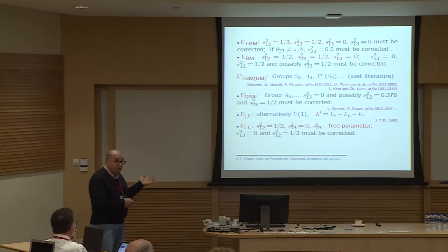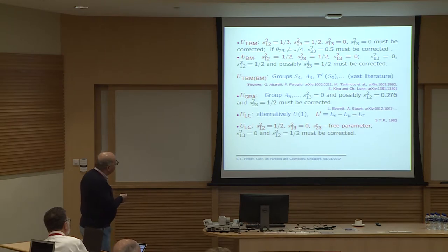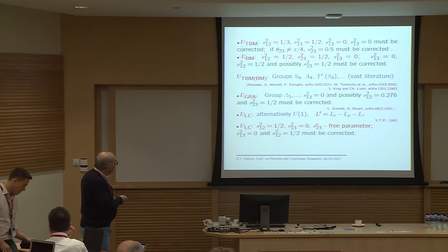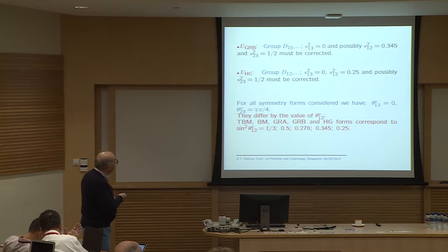These symmetry forms can be obtained from symmetry considerations. Tri-bimaximal mixing can come from groups S4, A4, or T′ (the double cover of A4). Bimaximal mixing can be generated by S4. Golden ratio A can be generated by A5 (even permutations of five objects). Golden ratio B can be generated by the dihedral group D₇, and hexagonal symmetry by dihedral group D₁₂.